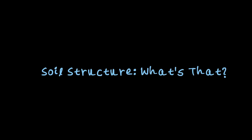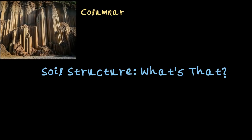Let's start with soil structure. Think of it as soil personality — it's all about how the particles in the soil are arranged. These particles come together in different shapes, and each shape has a unique role to play. The first is columnar soil structure. Just like the name suggests, and as you see in this picture, these are tiny pillar-like shapes standing tall in the soil. They are formed over a long period of time and are seen in dry, salty areas. This type of soil structure is not so good for healthy plant growth.